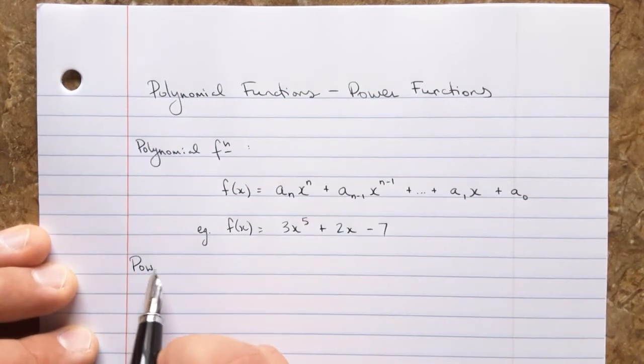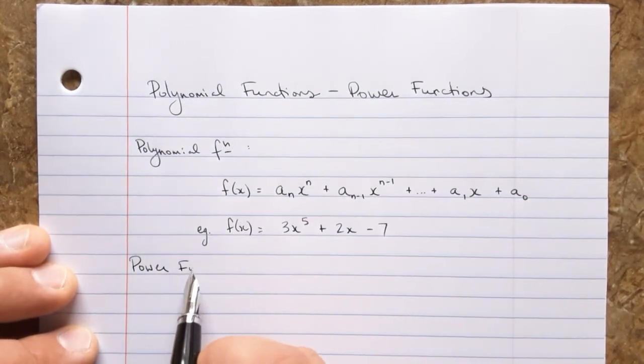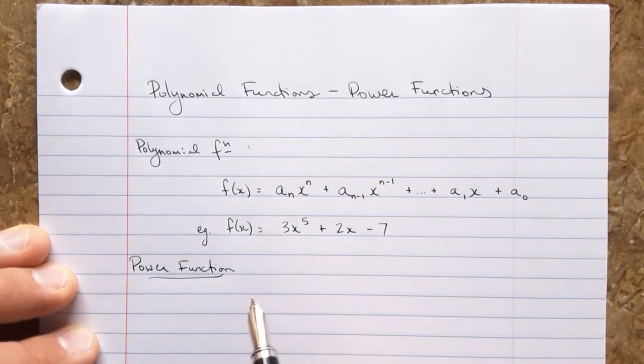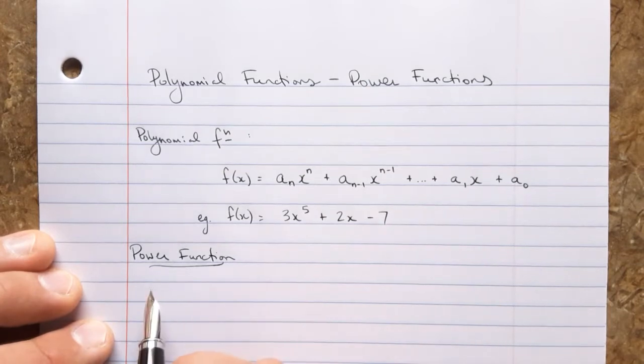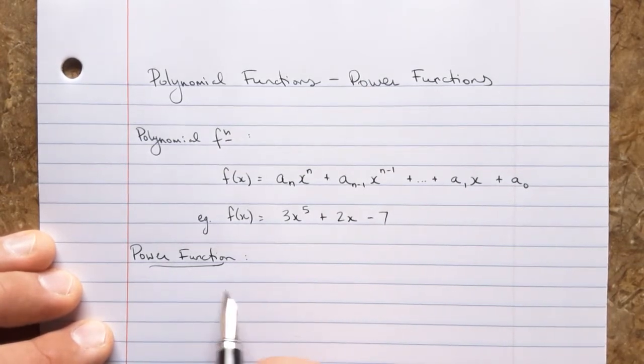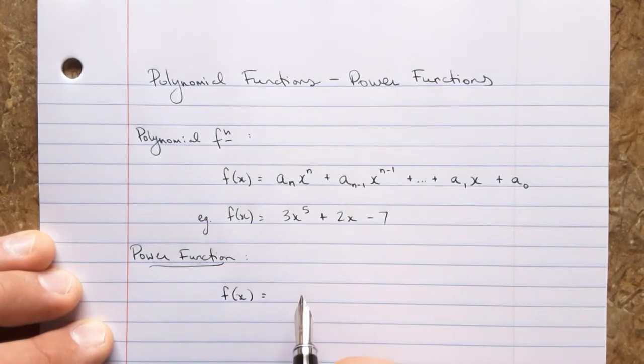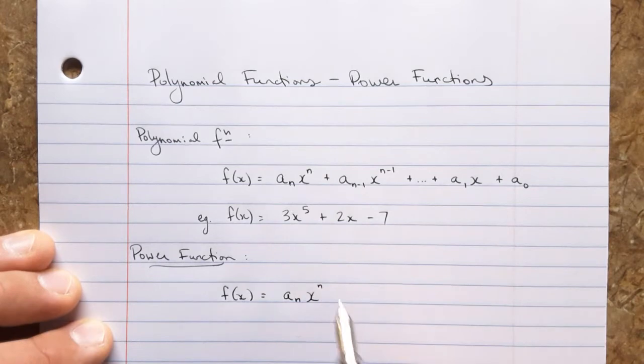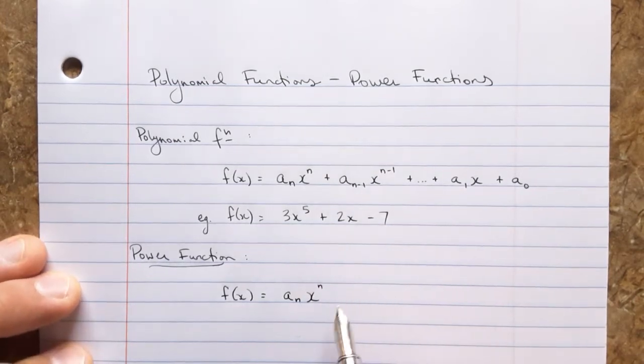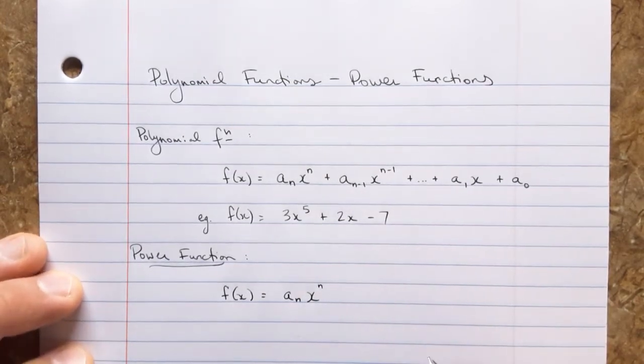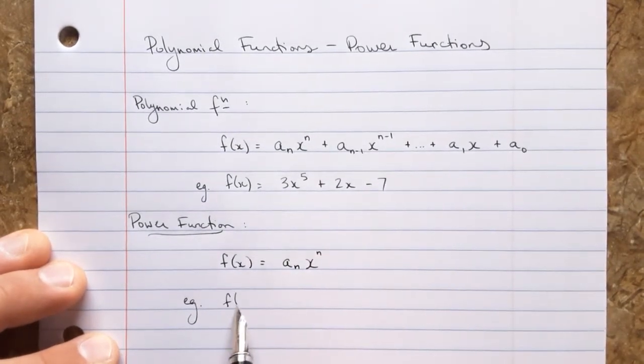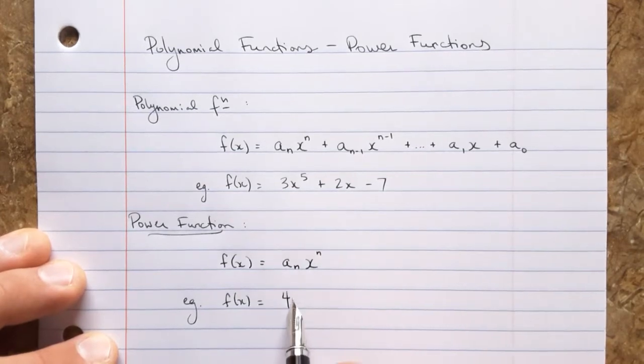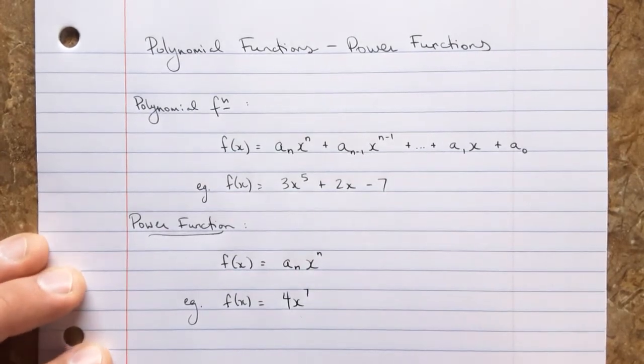Now a power function is a special type of these. The power function has a single term. So it looks like this: f of x equals a sub n, that's the coefficient, x to the exponent n. And that's it. No extra terms. Just a single term is a power function. So as an example, you might have something like 4x to the seventh.